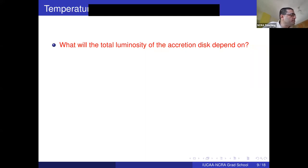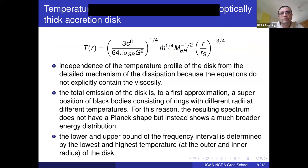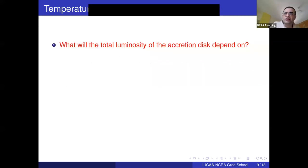If the temperature profile has all other parameters the same (same mass accretion rate, same black hole mass), but you can reach a smaller r for the Kerr black hole, you get a higher temperature and therefore a higher luminosity. Because of the strong T⁴ temperature dependence of black body luminosity, the Kerr black hole will be significantly more luminous.